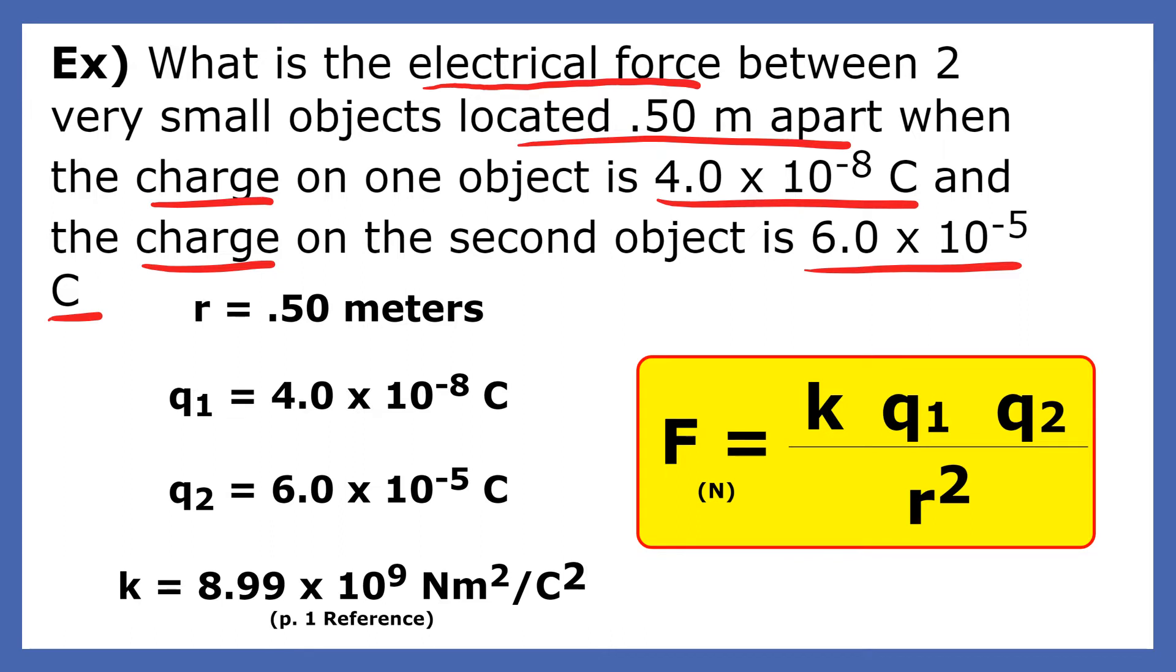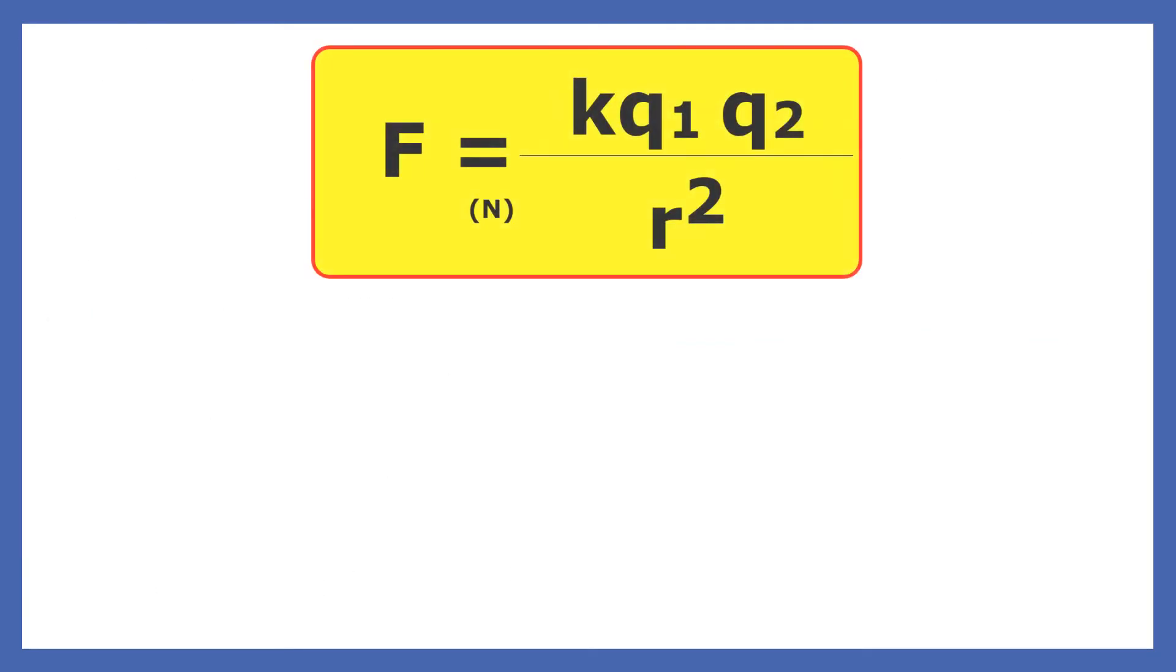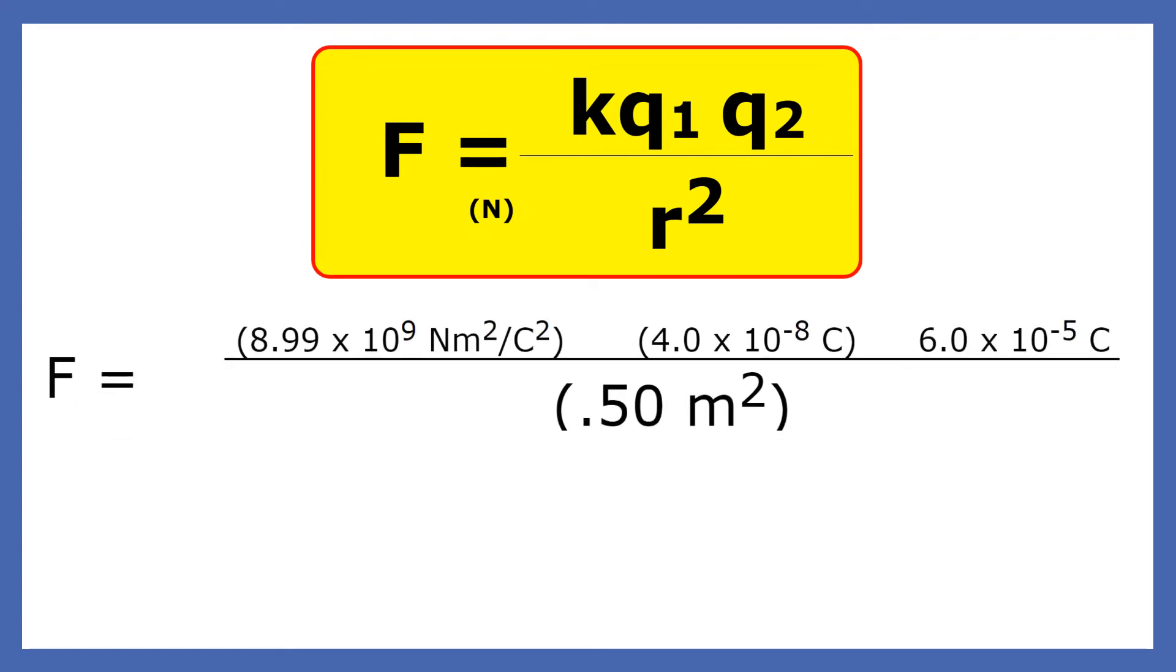Each charge is q1 and q2, and k is the electrostatic constant found on page one of your reference table. This is what it looks like when we substitute the electrostatic constant and the two charges and divide by the separating distance squared.